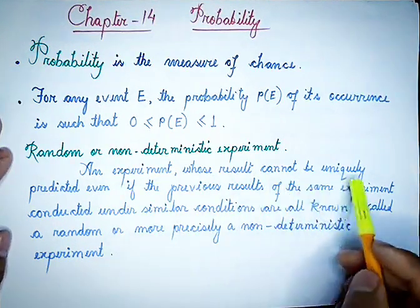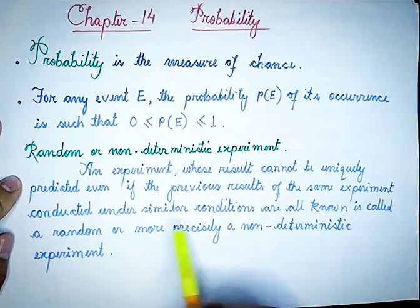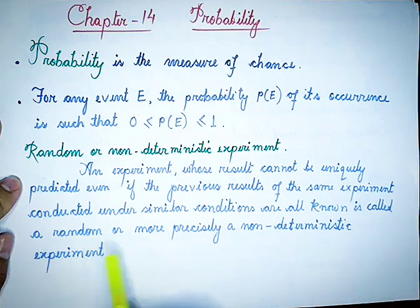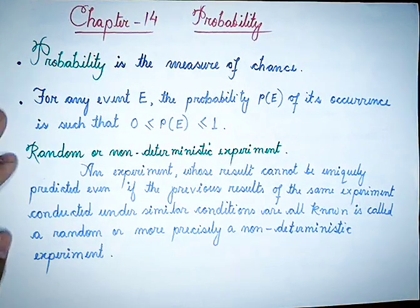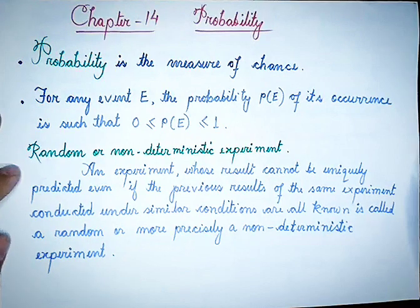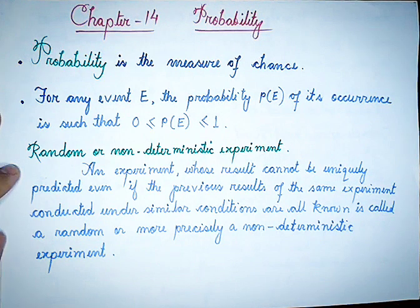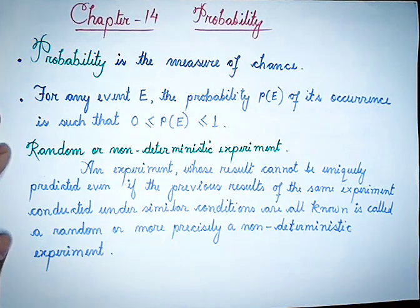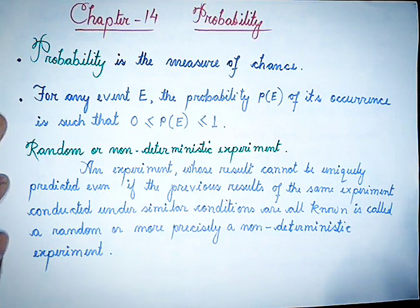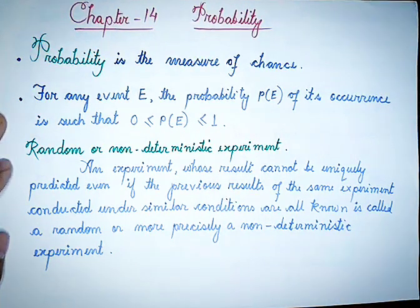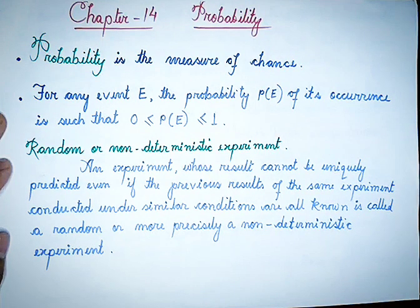Even if the previous results of the same experiment conducted under similar conditions are all known, the outcome cannot be predicted. This is called a random, or more precisely, a non-deterministic experiment.